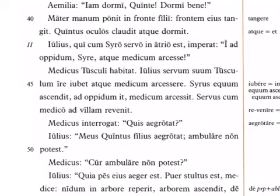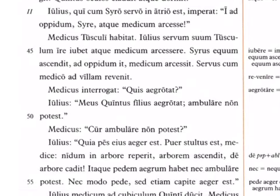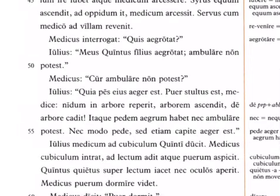Medicus interrogat — the doctor asks: Quis aegrotat? Who is sick? Who is ill? Julius says: Meus Quintus filius aegrotat — my son Quintus is ill. Ambulare non potest — he's not able to walk. The doctor says: Cur ambulare non potest? Why isn't he able to walk? Julius says: Quia pes eius aeger est — because his foot is unwell.